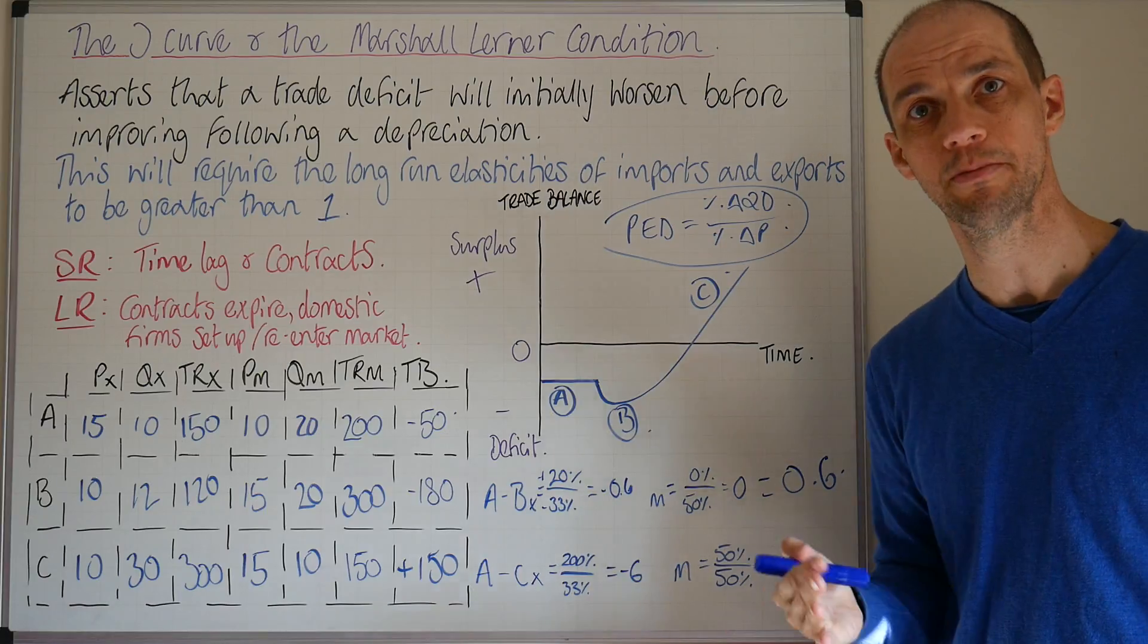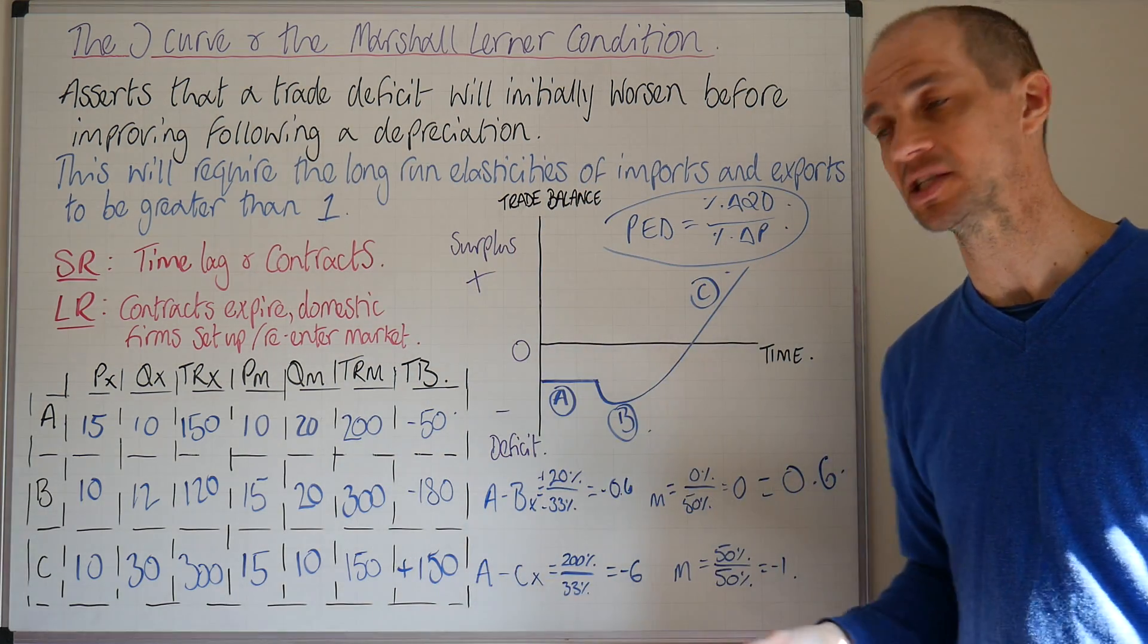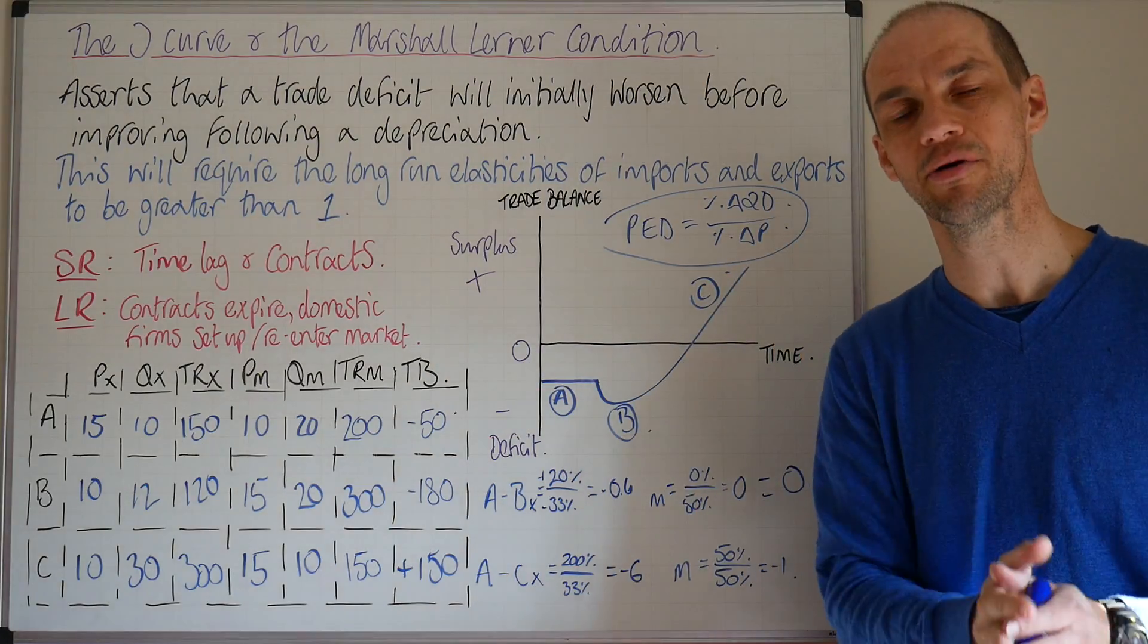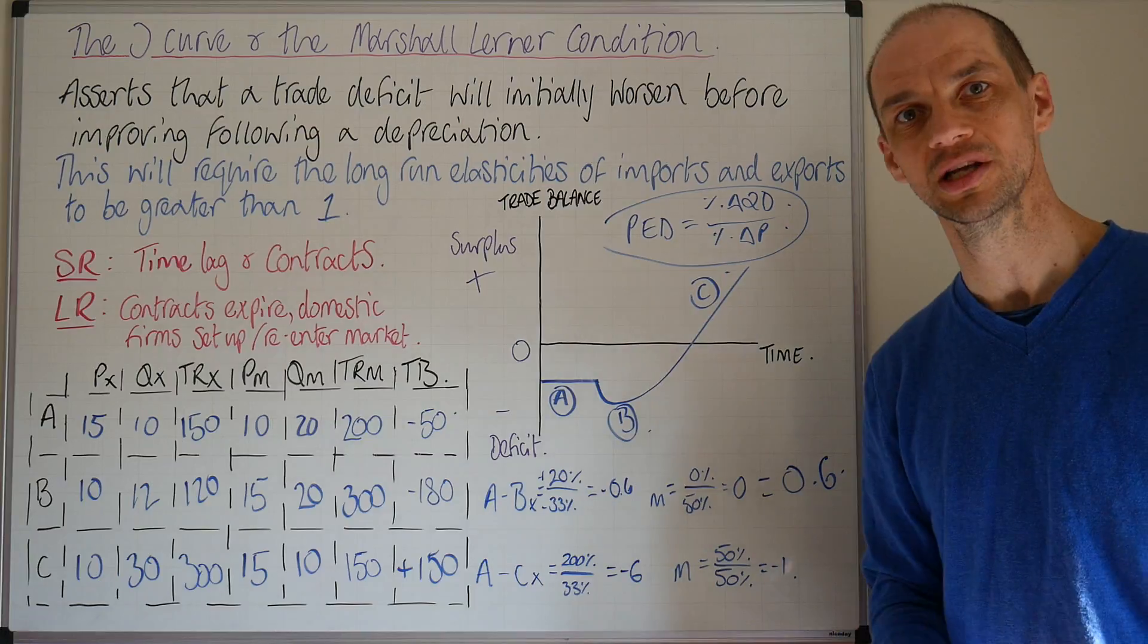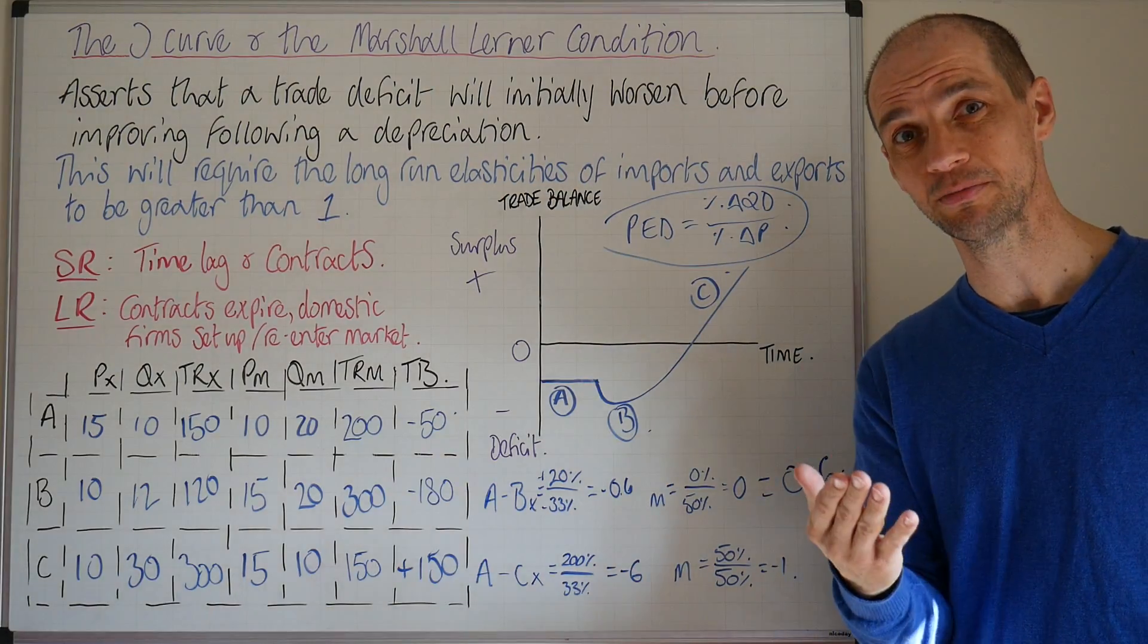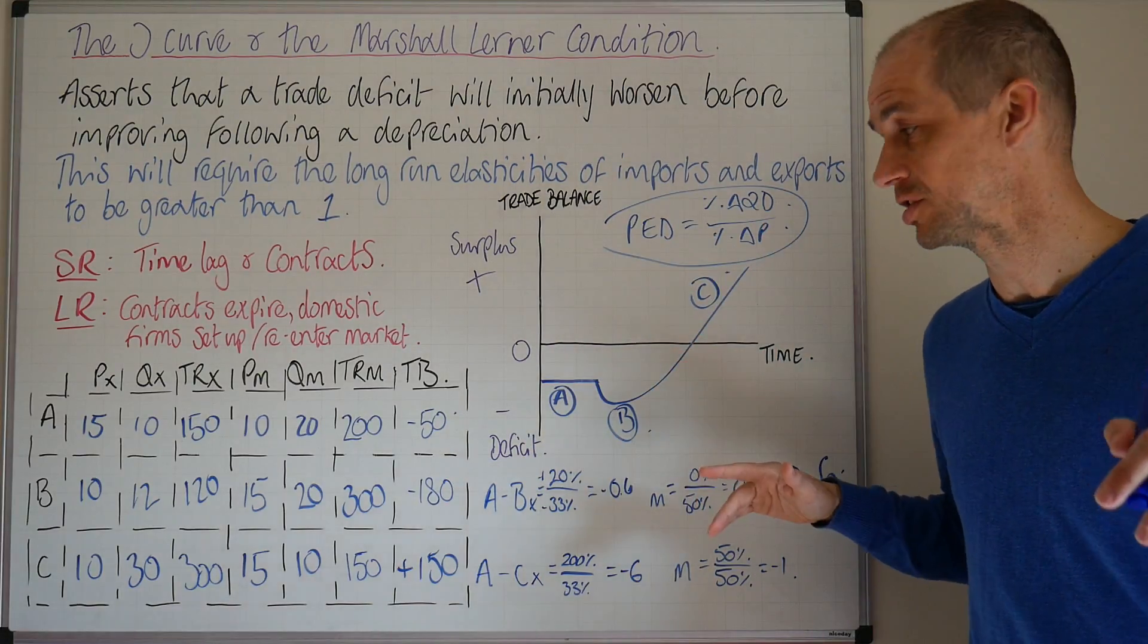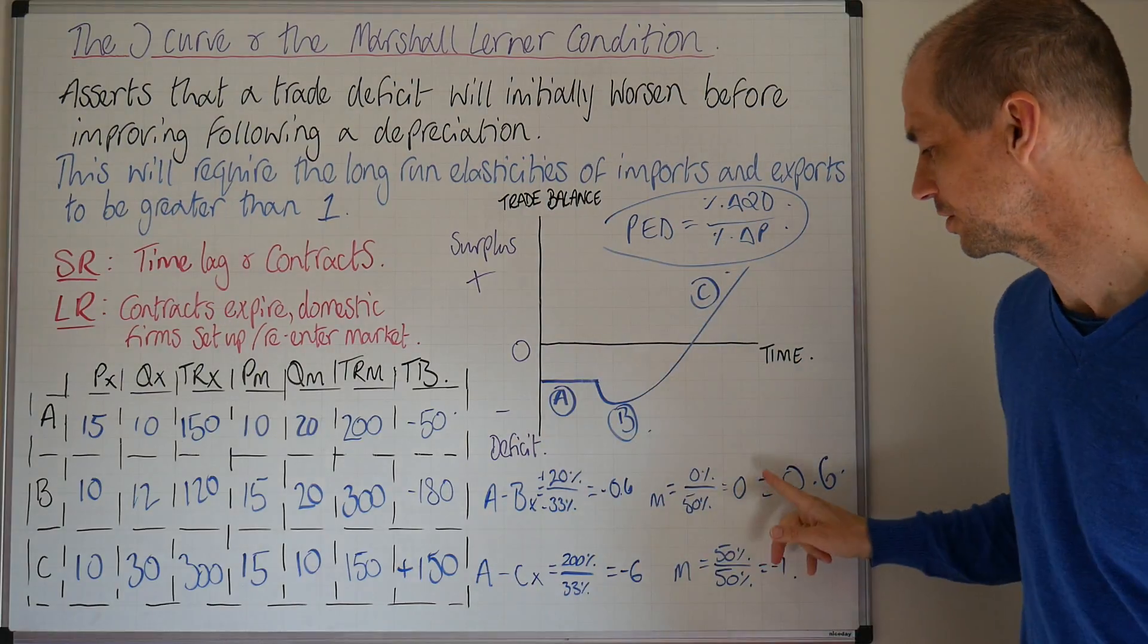But as people begin to understand and adapt their expectations to that depreciation, contracts expire, and holidaymakers who had previously booked onto a particular location can now think, 'Oh, there's been a depreciation, that means meals out and just going there generally is going to be more affordable.' They can pick different destinations. In the UK in summer 2017, there have never been as many holidaymakers from abroad as there were during that summer period. That didn't happen in summer 2016, so holidaymakers may reflect this J-curve quite nicely.